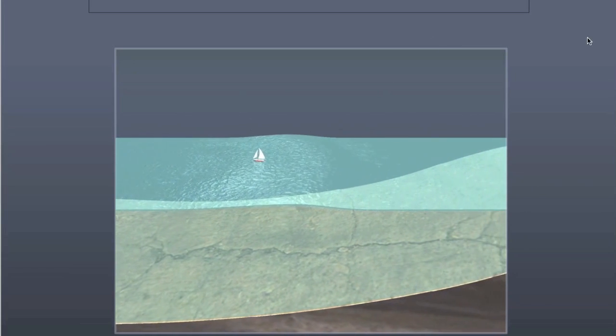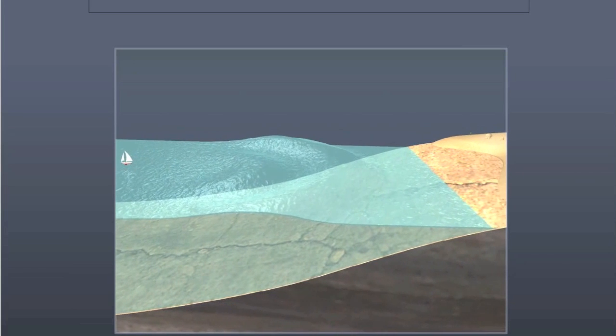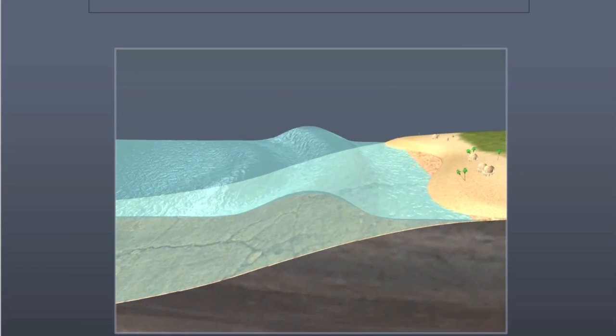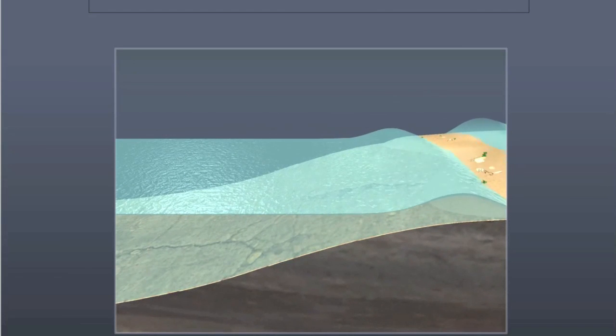Traveling very quickly, tsunami waves slow down, bunch up, and grow taller when they reach shallow water near the shore. Waves that were small in deep ocean can grow large and very dangerous, causing tremendous damage and extensive flooding.